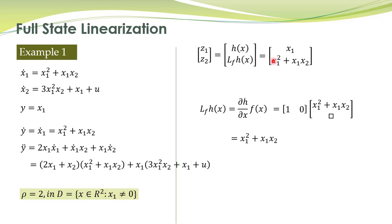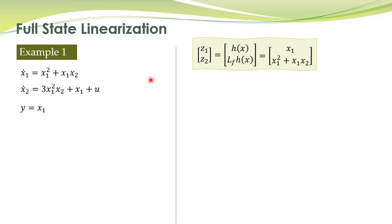That is simple: z1 dot is equal to x1 dot, and x1 dot is given here. x1 dot is this one, which is by definition equal to z2.